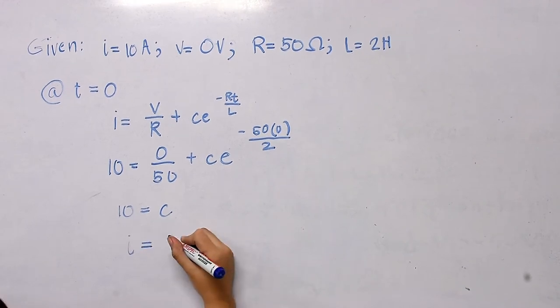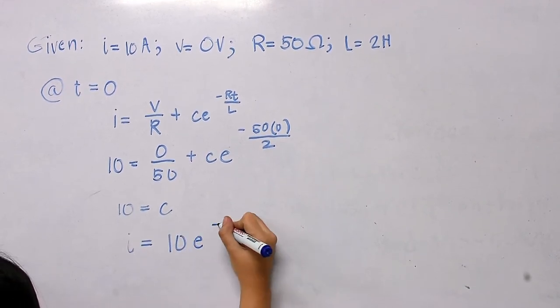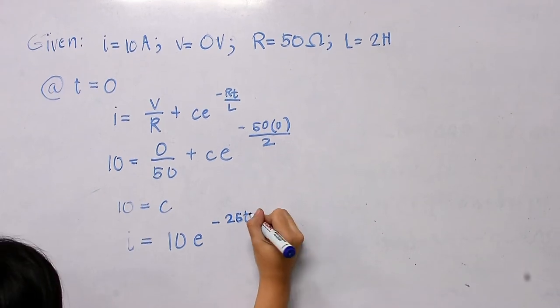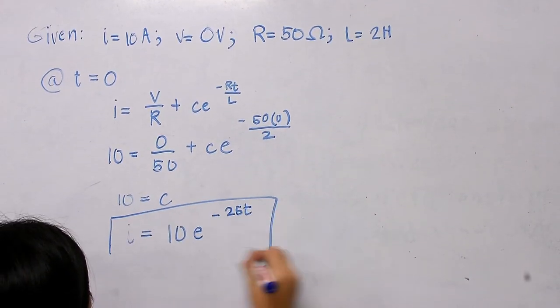In conclusion, the equation to get the current of this problem with respect to time is i equals 10 times e raised to the power of negative 25t.